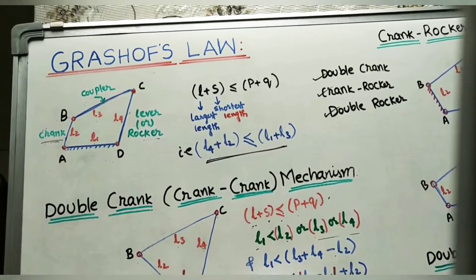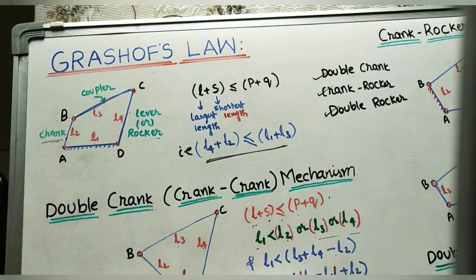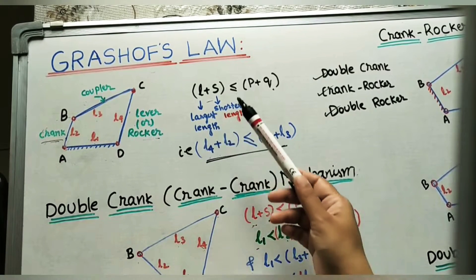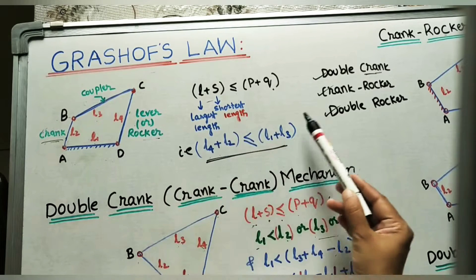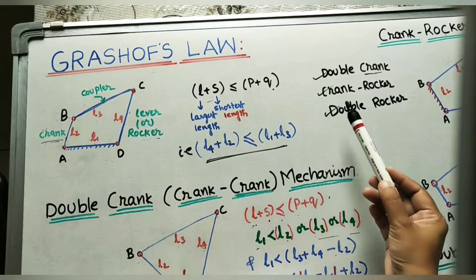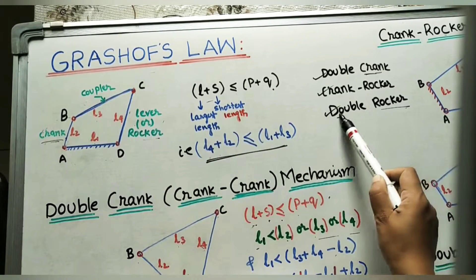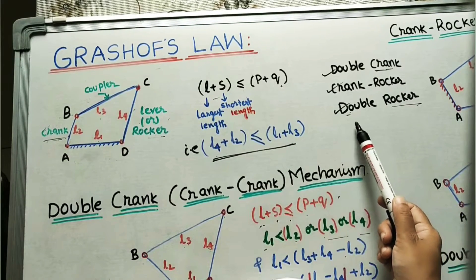Always remember: a crank makes complete rotation, while a lever or rocker oscillates. Based on Grashof's law conditions, we can identify whether the mechanism is a double crank mechanism (two links making complete rotation), a crank rocker mechanism (one crank making complete rotation and one rocker oscillating), or a double rocker mechanism (two links oscillating).